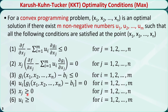The fifth condition is just the sign restriction for xj, and it should be applied to all the decision variables. The last condition is just the sign restriction for ui, and it should be applied to all the m conditions, u1 through um.